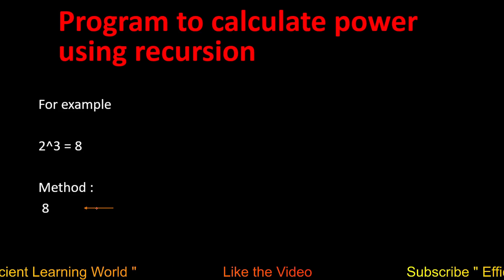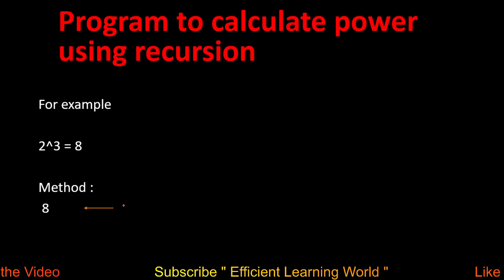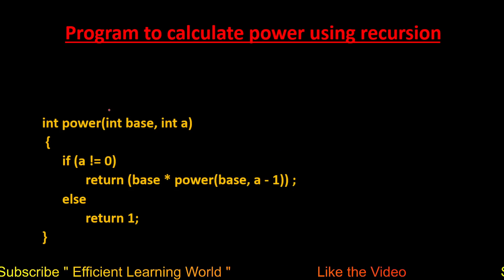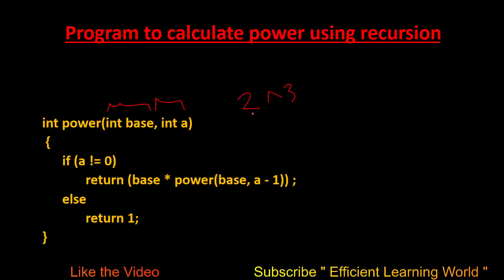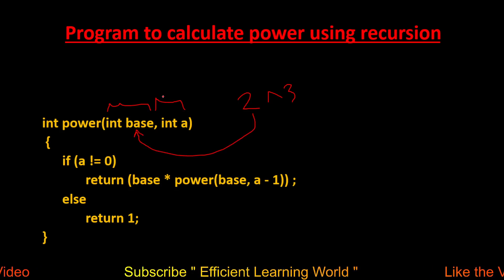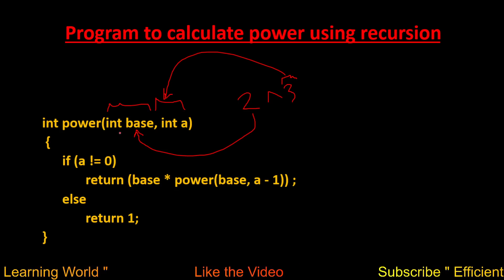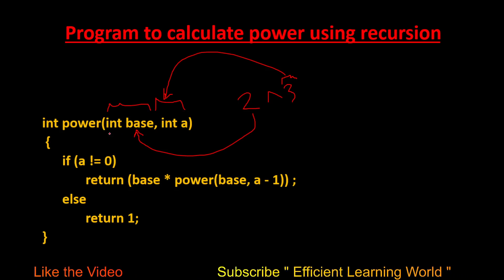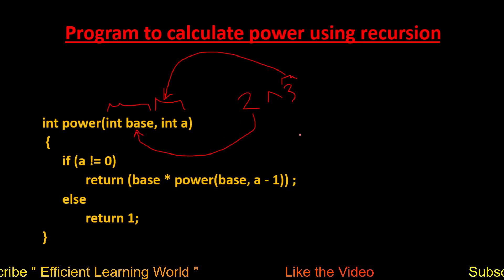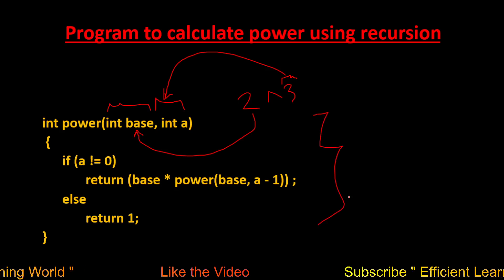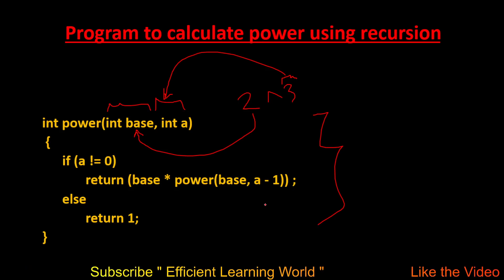If you didn't fully understand that example, don't worry — I will explain each step in the pseudocode. This simple function receives two arguments: one is the base and the other is the power. For 2 raised to power 3, base=2 and power=3. The data type can be int, float, or double depending on your needs. This works in both C and C++; in Python the concept is the same but syntax differs since Python has no explicit data types.